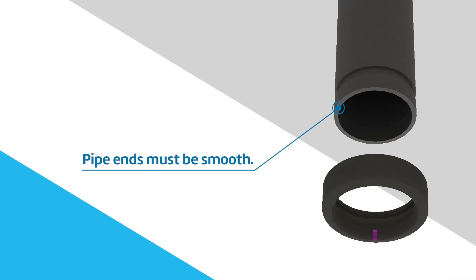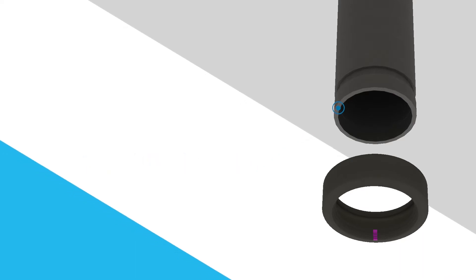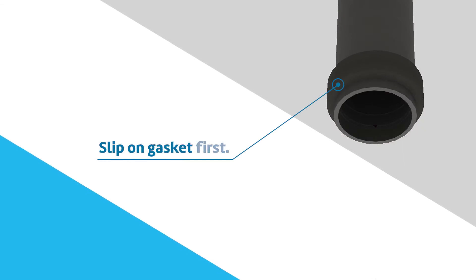Pipe end must be smooth and free from metal burrs, sharp edges, or projections. Slip the gasket over the pipe, making sure it does not overhang the pipe end.